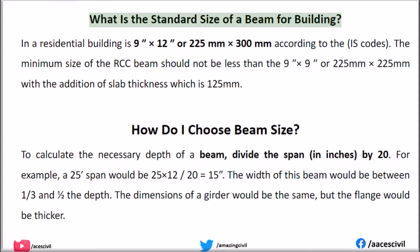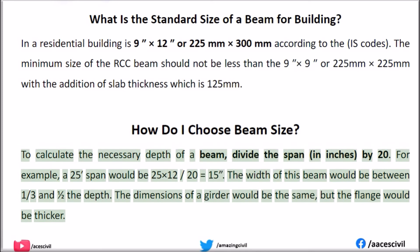What is the standard size of a beam for building, and how do you choose beam size? To calculate the necessary depth of a beam, divide the span in inches by 20. For example, a 25-foot span would be 25 times 12 divided by 20, which equals 15. The width of the beam would be between one-third and one-half of the depth.